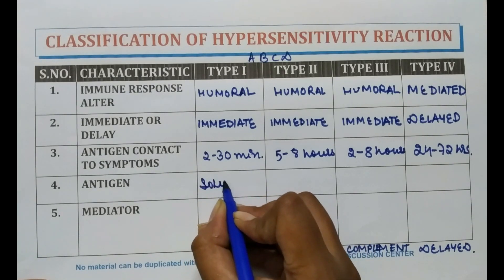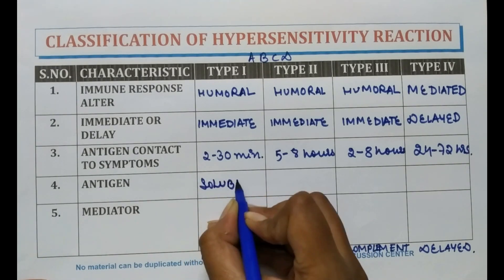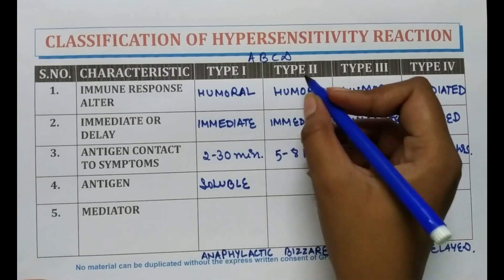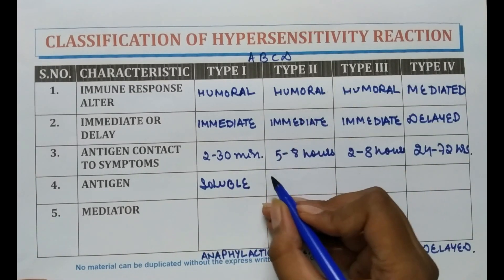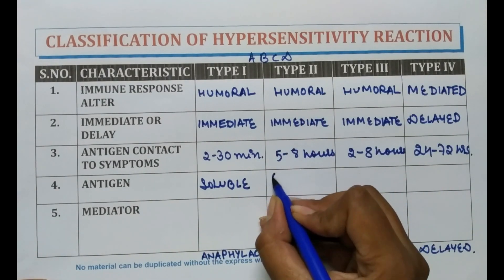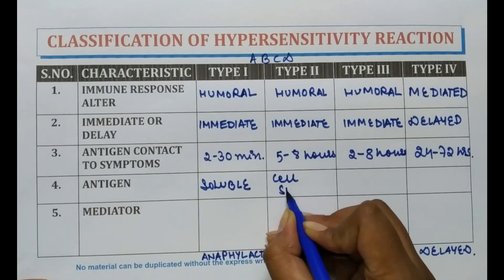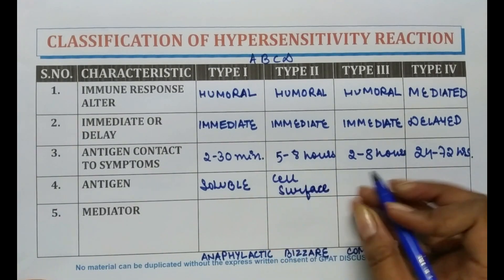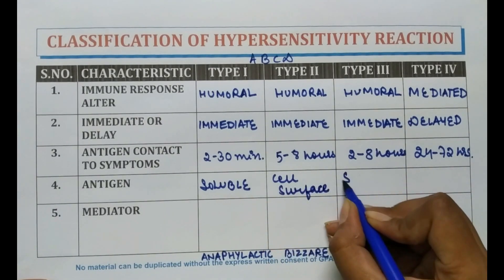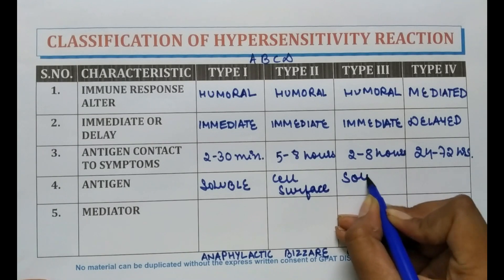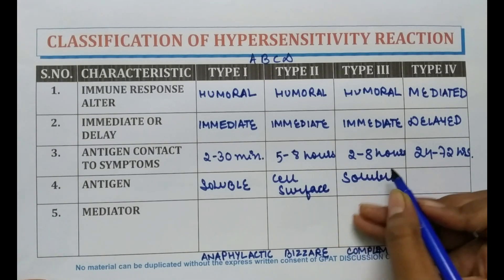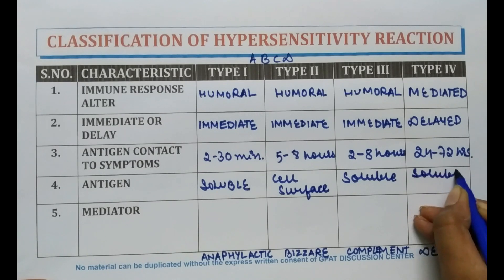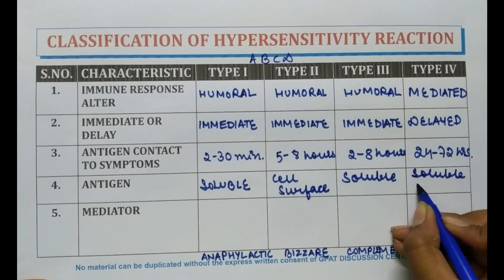Antigen involved in Type 1 is of soluble nature. In Type 2, cell surface antigens are involved. In Type 3, again soluble antigens are involved. And in Type 4, it is soluble or cell-bound antigen.